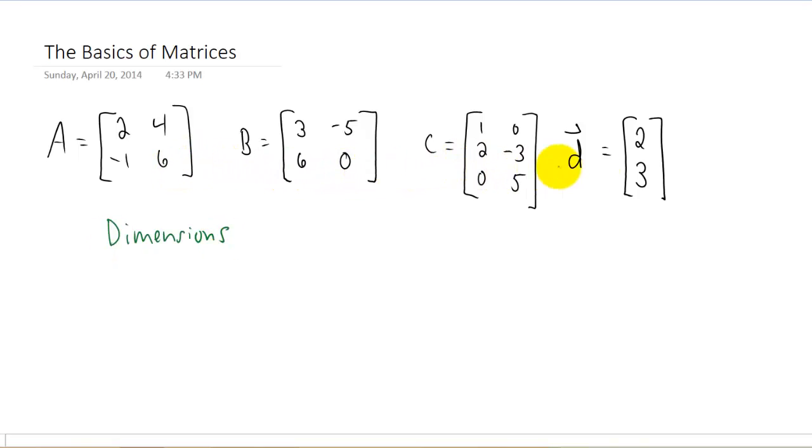Each one of these is considered to be a matrix, and every matrix has dimensions. This here is a 2 by 2 matrix, and this here is a 2 by 2 matrix as well. C is a 3 by 2 matrix, so now you'll realize that we write the number of rows as the first number and the number of columns as the second number. And D here is a 2 by 1 matrix.